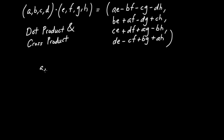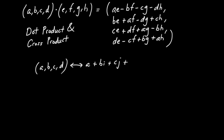I'll also remind you that if I have some quaternion (A, B, C, D), I can go back and forth between writing it like this and writing it as A + Bi + Cj + Dk. And I'll also remind you that one often breaks a quaternion into two parts.